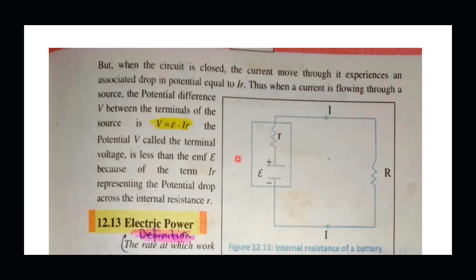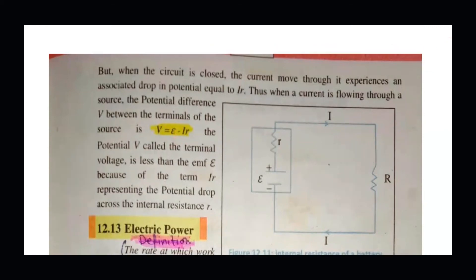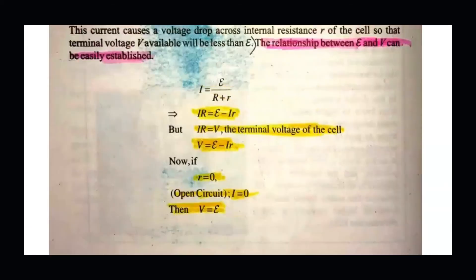The reason is the dissipation across the internal resistance and the energy dissipated in the source. The total voltage in the circuit is the actual EMF of the circuit minus IR. We can write V equal to IR for the main circuit. We can also write E equal to I times total resistance. We discuss this through formula derivation.